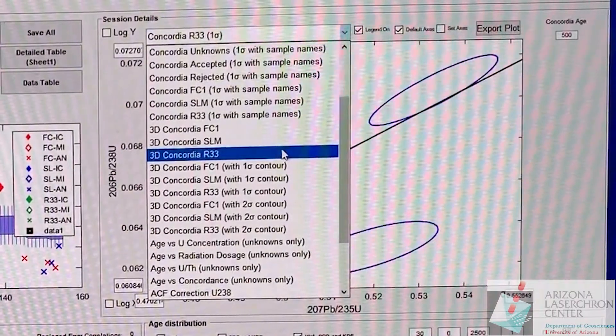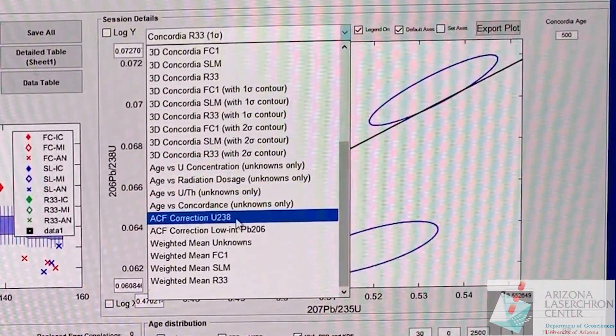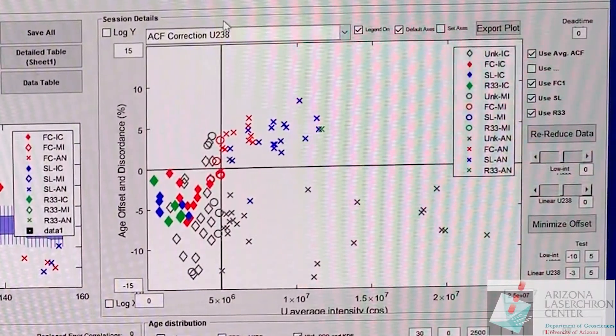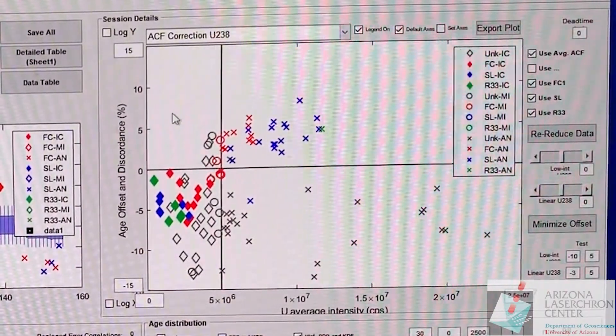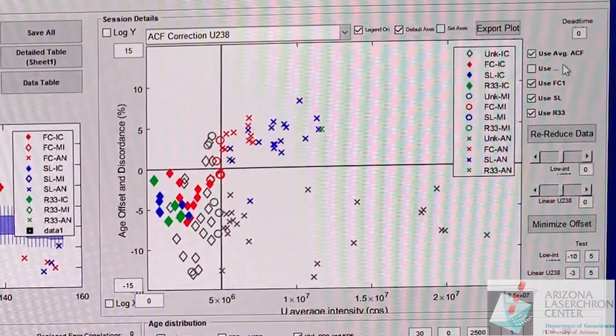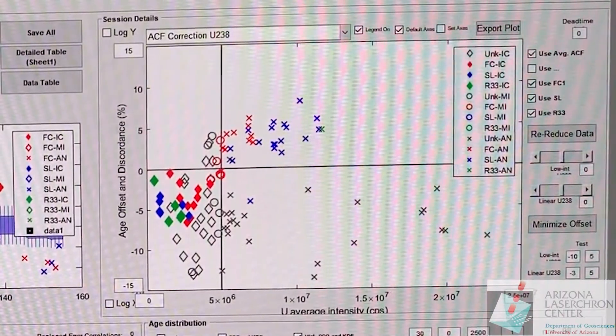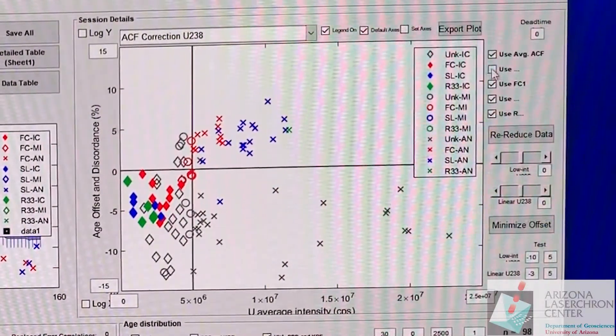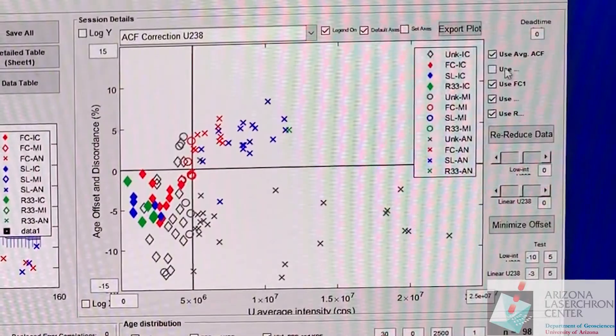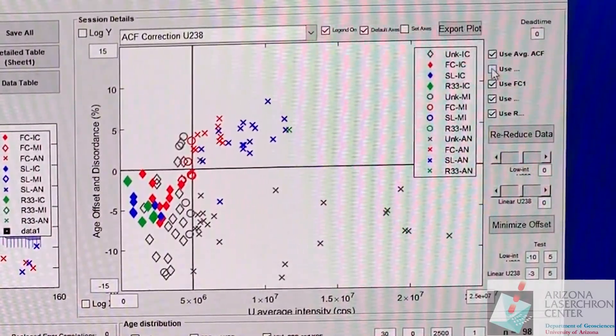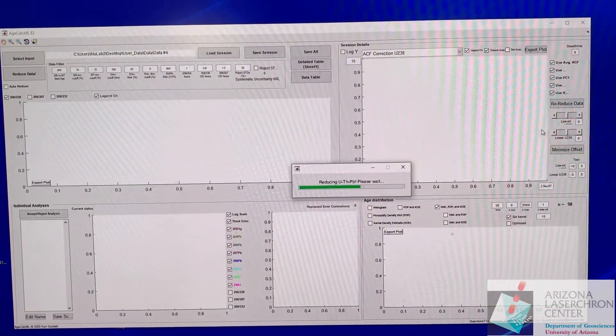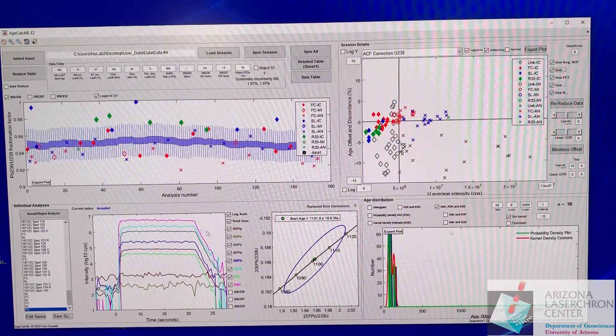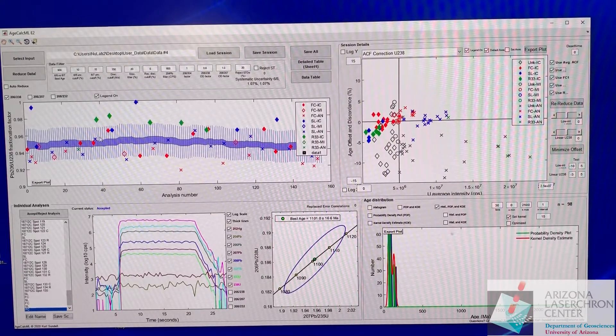The first thing that I like to adjust is the ACF correction here, ACF correction of 238 specifically. We have a number of different options over here. It's kind of trimmed off right here, you can't really see it. If you're on a bigger screen, this will say use 235. If you click that, this will now use 235 instead of your 238 measurements.